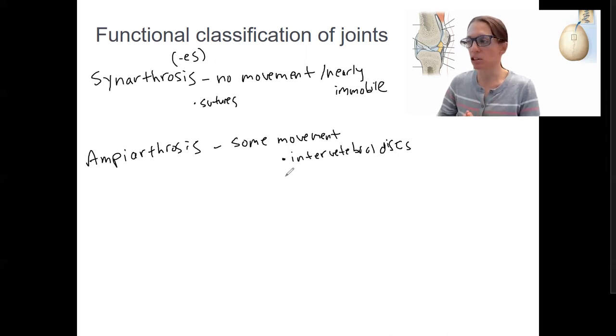They provide stability as well. Your pubis symphysis is a fun word. In between your two pelvic bones is an amphiarthrosis. So there's a little bit of flexibility in there. It's not completely stiff, but it's not like your elbow.